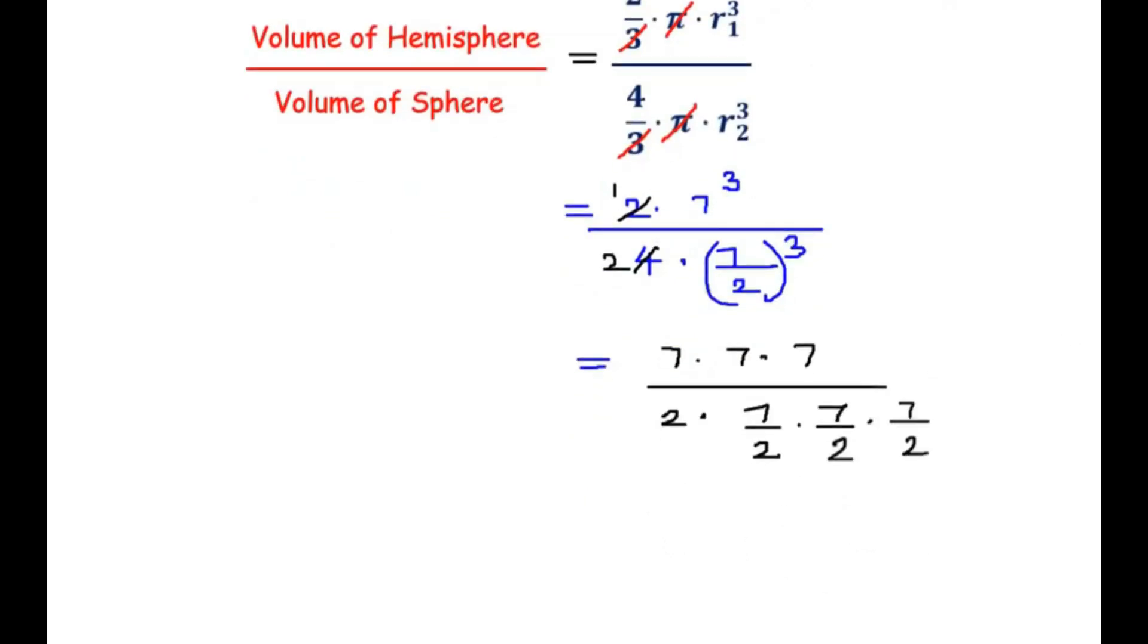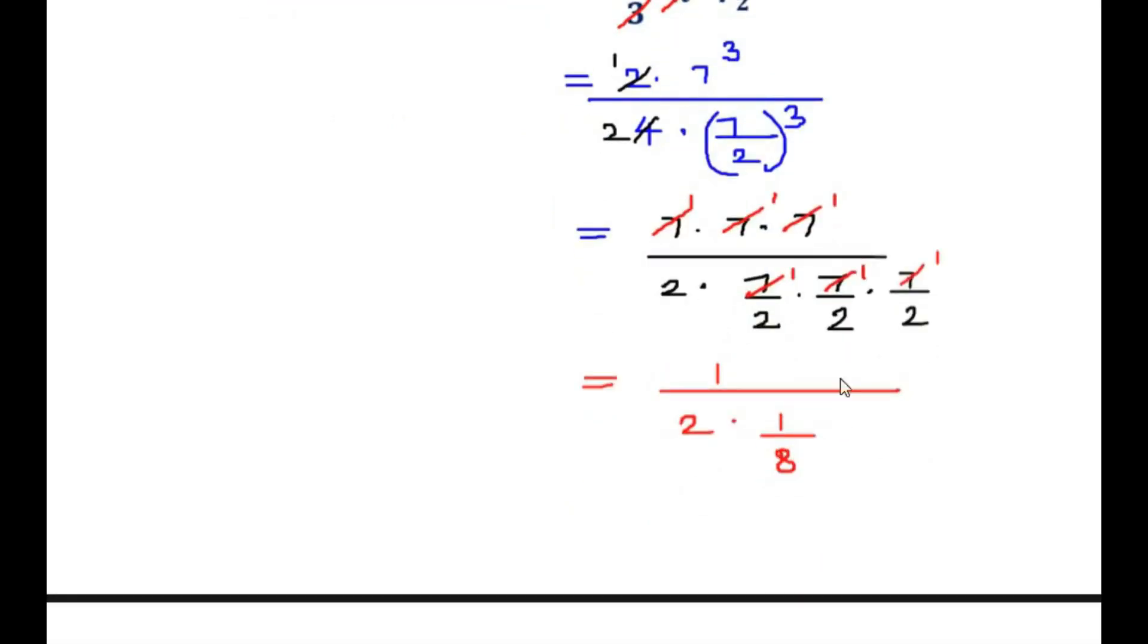Now let us further simplify this. All three 7's from the numerator divide the 7's from the denominator. We are left with 1/(2 × 1/2 × 1/2 × 1/2). Multiplying the denominators gives 1/8. Now 1/8 flips upside in the denominator, so we get 1/2 × 8/1.